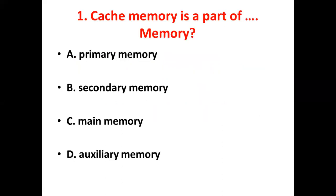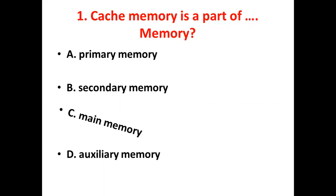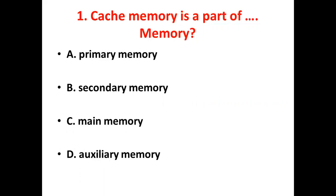First bit: Cache memory is a part of dash memory. Option A, Primary memory. Option B, Secondary memory. Option C, Main memory. Option D, Auxiliary memory. The answer is Option C, Main memory.